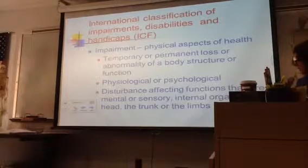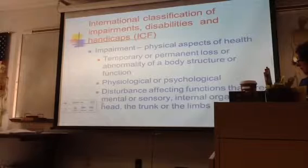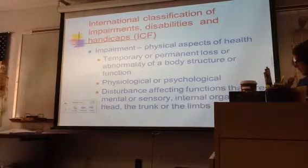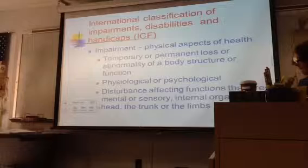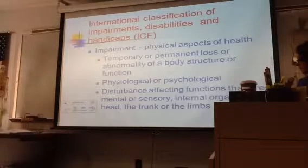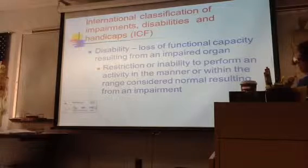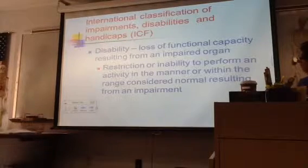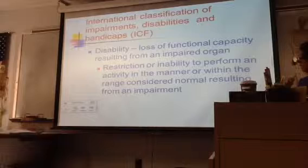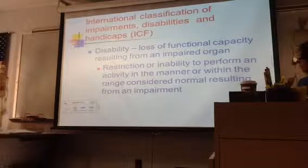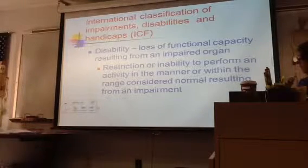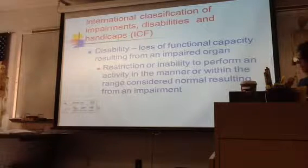Impairment also includes disturbance affecting functions that are mental or sensory, internal organs, the head, the trunk, or the limbs. Their definition of disability is a loss of functional capacity resulting from an impaired organ — restriction or inability to perform an activity in the manner or within the range considered normal, resulting from an impairment.